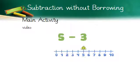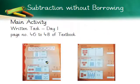5 minus 3 — the frog starts at 5 and moves 3 places to the left, landing on 2. So 5 minus 3 equals 2.